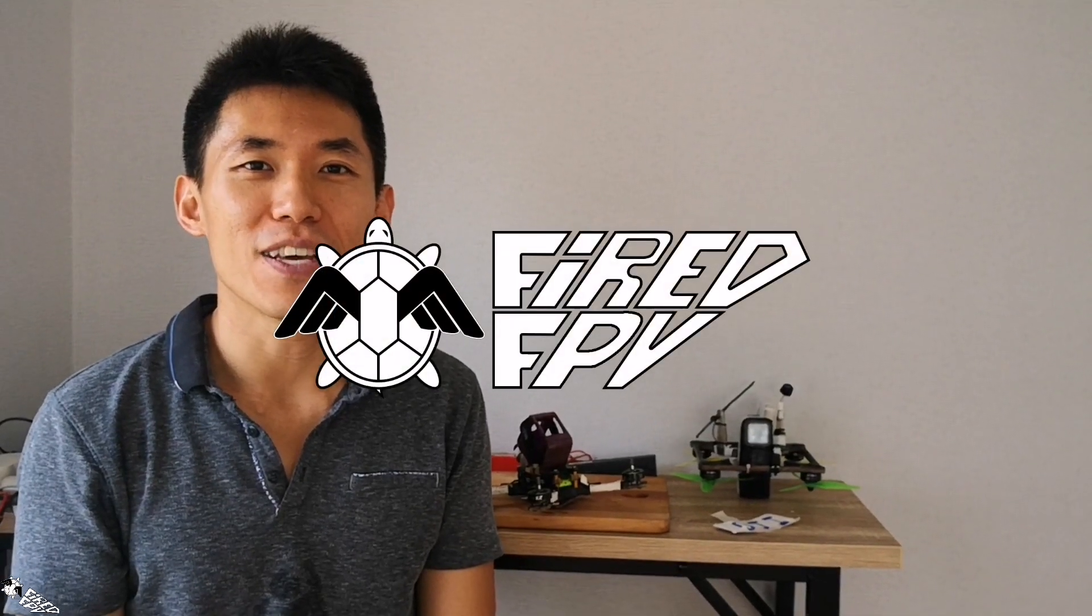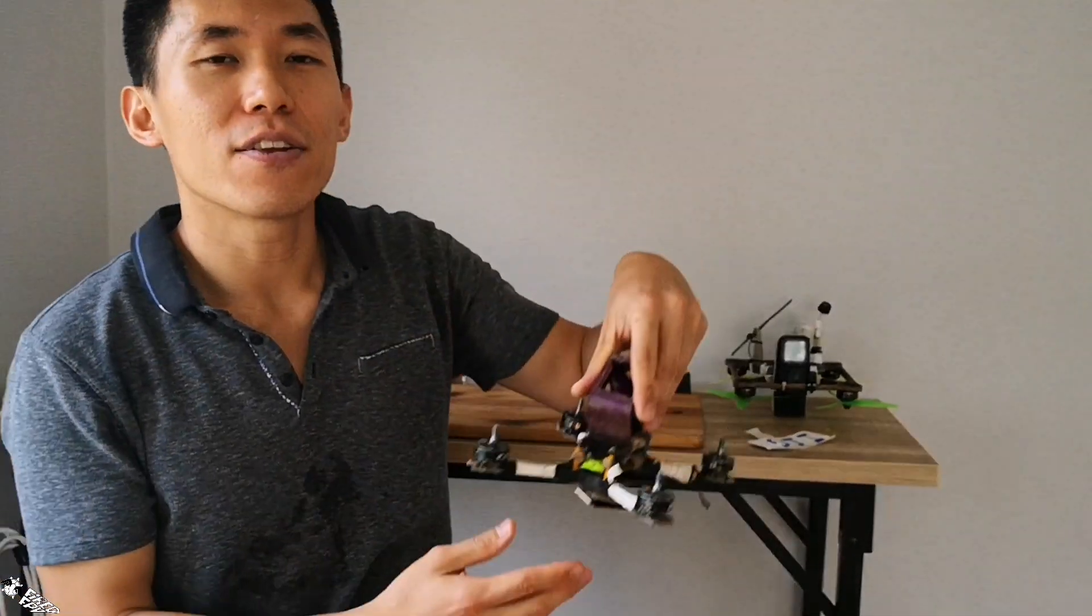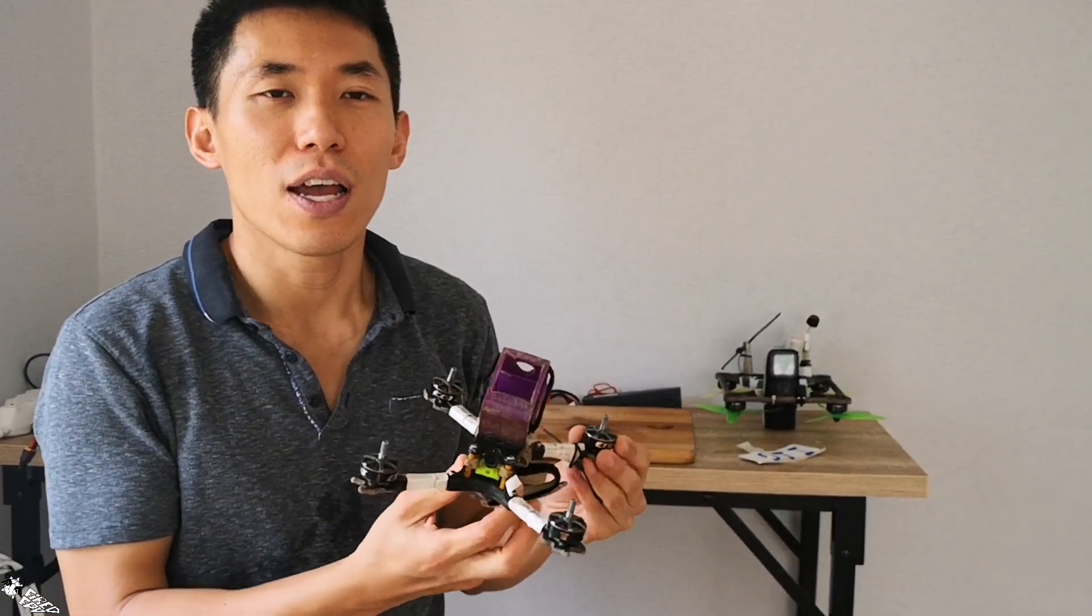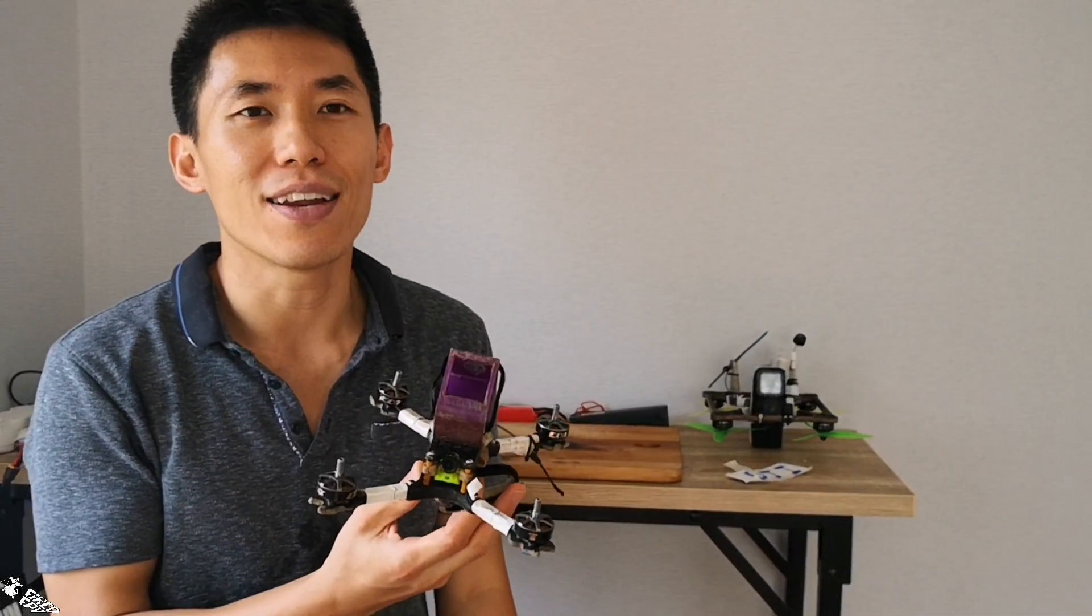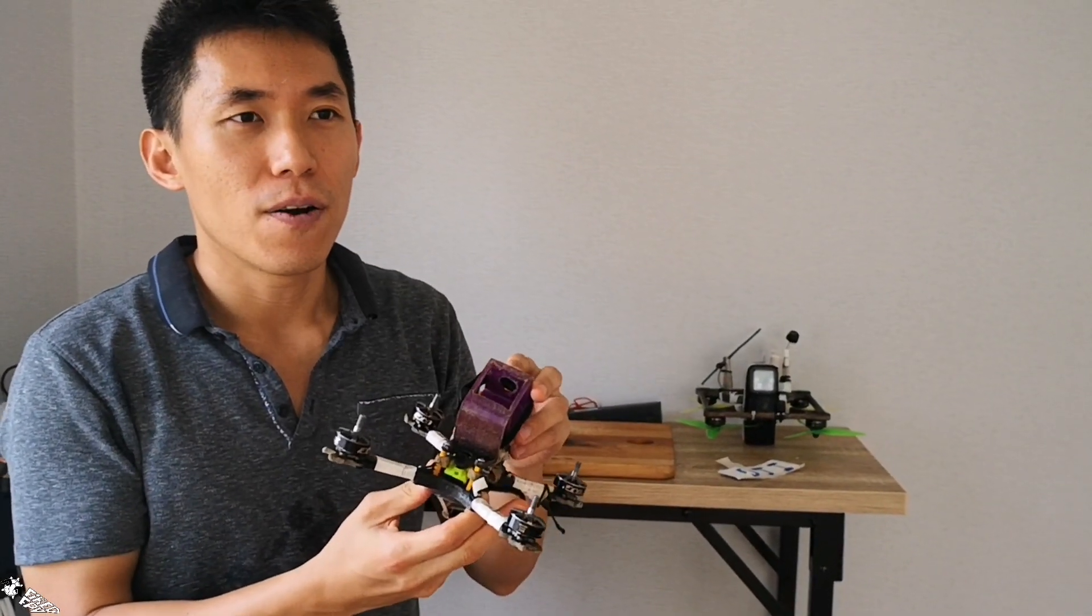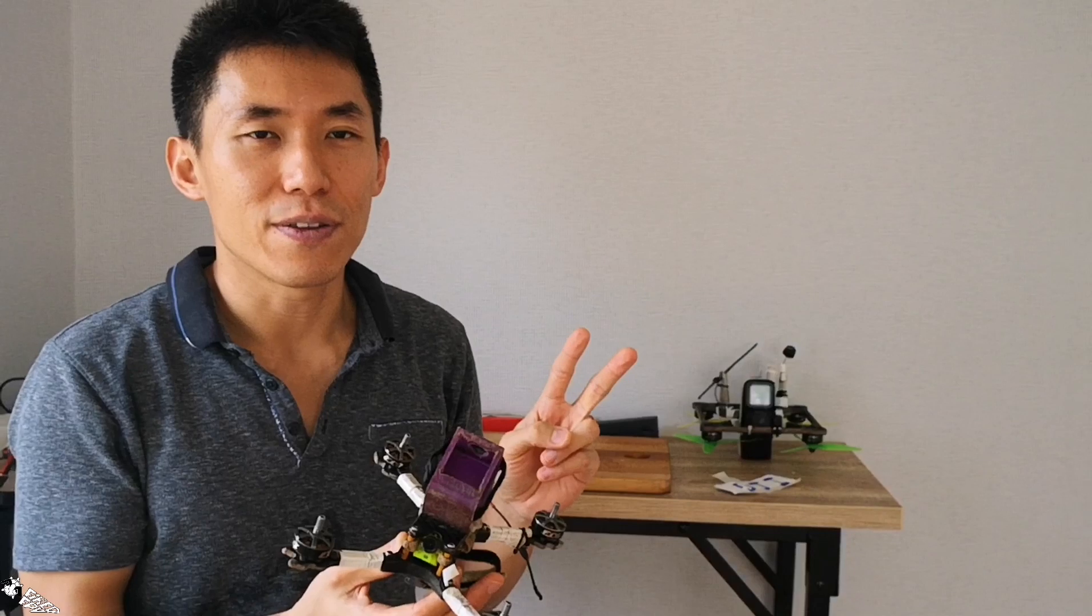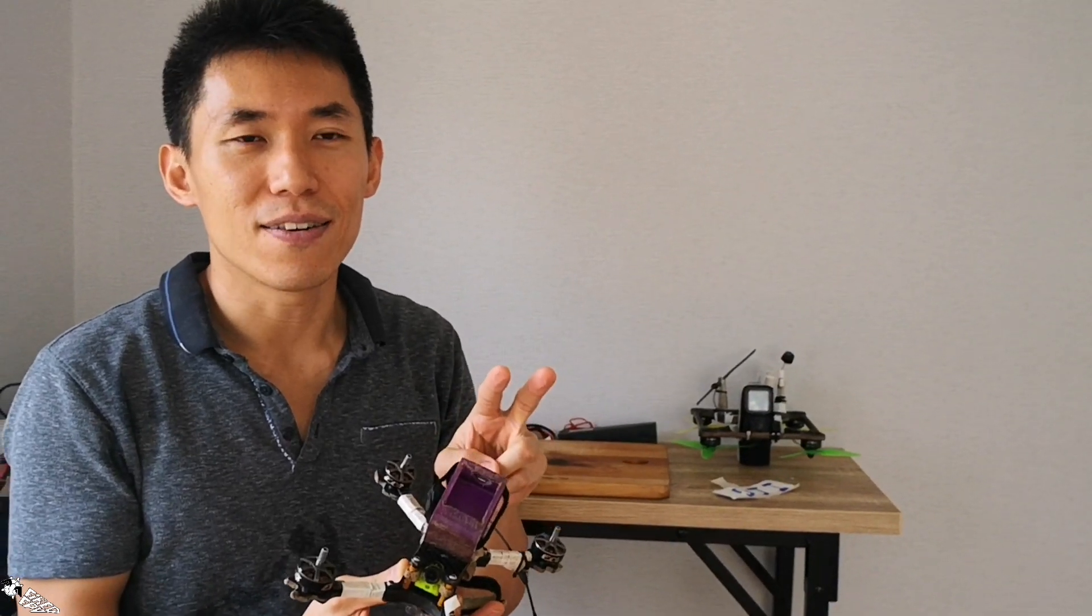Hi guys, if you come across this video, you probably don't know what Acro Mode is, so let's start with that. There are three modes in a drone: Angle Mode, Horizon Mode, and Acro Mode.